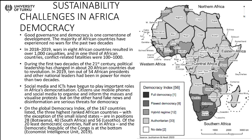Democracy has not been fully implemented in all parts of Africa. That is a key issue for a transparent society and sustainable development — we need democratic societies. Social media and information communication technology have started to play a part in democracy and development. Unfortunately, on the democracy index, out of the 20 least democratic countries, half of them are in Africa — the last 10 of the bottom 20 are in Africa.